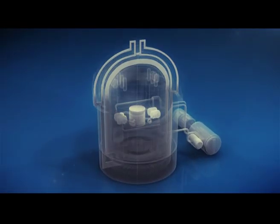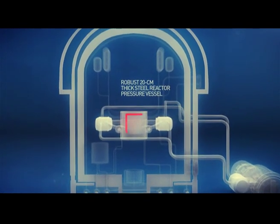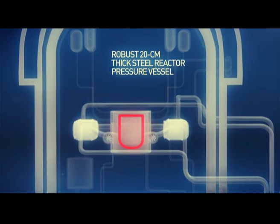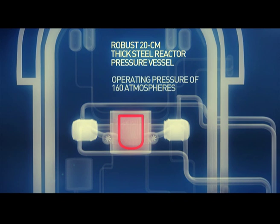The third barrier is the 20-centimeter-thick reactor pressure vessel, which is designed for a pressure of 160 atmospheres. The reactor pressure vessel prevents fission product releases into the shielding structure.